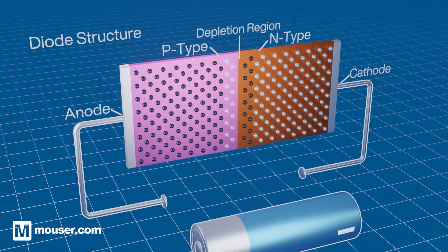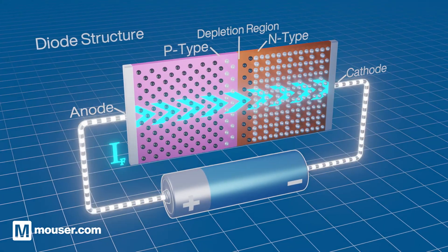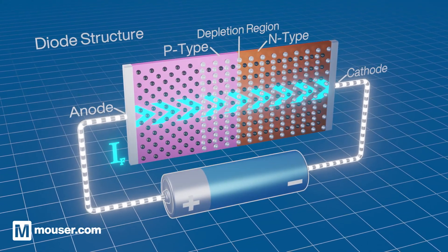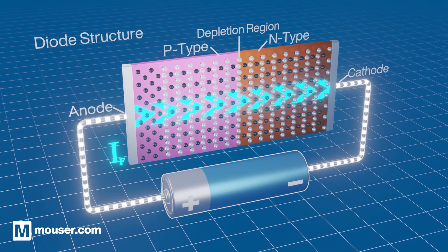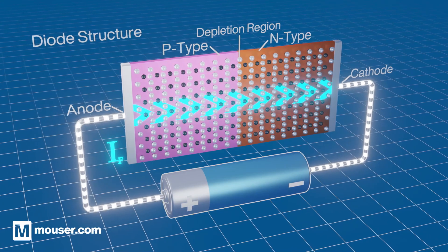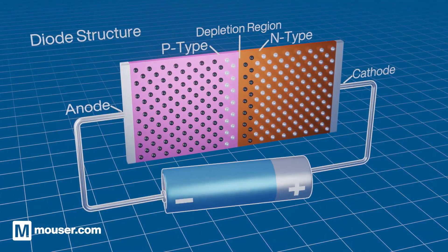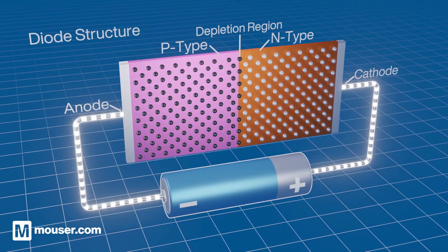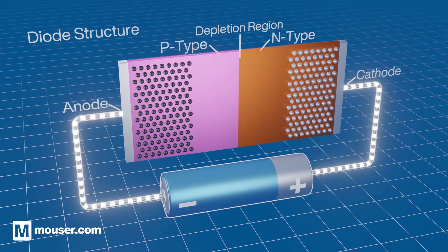The depletion region has its own potential, known as the threshold voltage. By applying an external voltage greater than and opposite to the threshold voltage, the diode becomes forward biased and current begins to flow. If the external voltage is applied in reverse, the depletion region is enlarged and no current flows.